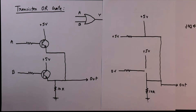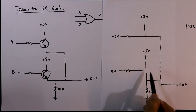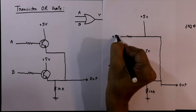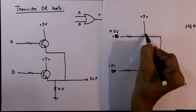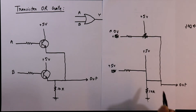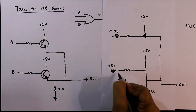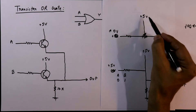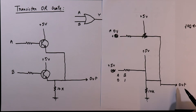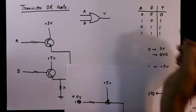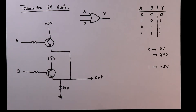For the third condition, we apply 0V to the first input and 5V to the second, so that transistor works as a closed circuit and the other as an open circuit. This time the 5V is connected to the output through the second transistor. So for the third condition, input 0 and 1, the output is 1. For the fourth condition, when both inputs are 1, both 5V paths are connected to the output and we also get 1. So this is how this circuit works.